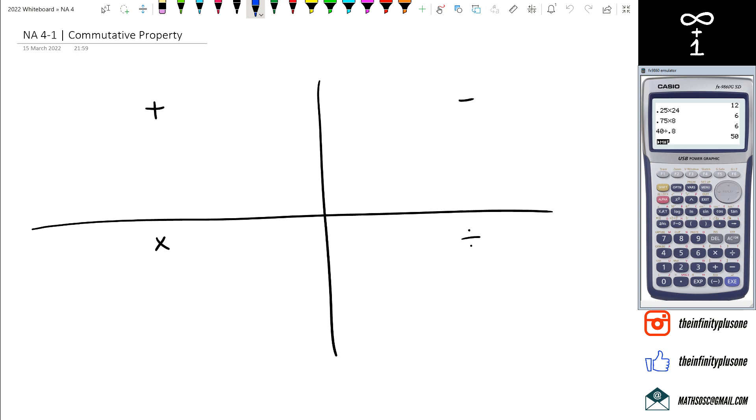Hey guys, in this session we're going to be looking at the commutative property. I don't know how to say it, but I do know how it works with the numbers. Let's have a look at this. We're going to look at addition first. What does this property actually mean? It basically means the order doesn't matter.